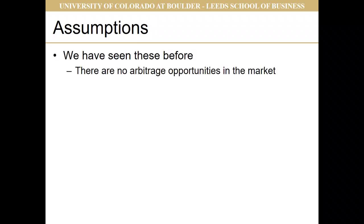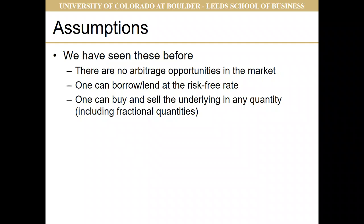There are no arbitrage opportunities in the market. This model for option prices uses the concept of arbitrage and the fact that we can't find arbitrage in the market to come up with the option price. One can borrow and lend at the risk-free rate. One can buy and sell the underlying asset in any quantity, including fractional quantities — you've seen this when looking at Binomial Trees. There are no transaction costs for buying and selling the underlying, and no transaction costs for borrowing or lending at the risk-free rate.